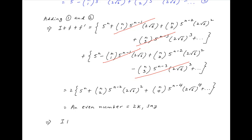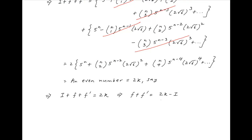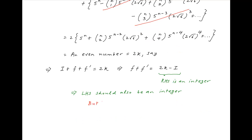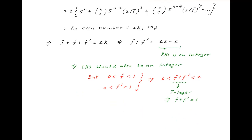Let's denote it by 2k. Therefore i + f + f' = 2k. Subtracting i from both sides, f + f' = 2k - i. On the right-hand side, both 2k and i are integers, so the right-hand side is an integer, and therefore f + f' must also be an integer. But we know f and f' are proper fractions, so both lie between 0 and 1. Adding these inequalities, 0 < f + f' < 2, and the only integer in this range is 1, therefore f + f' = 1.